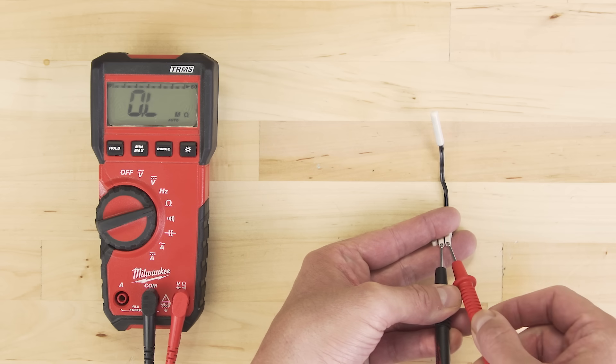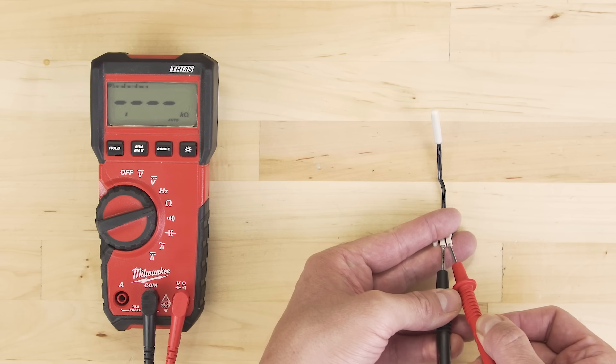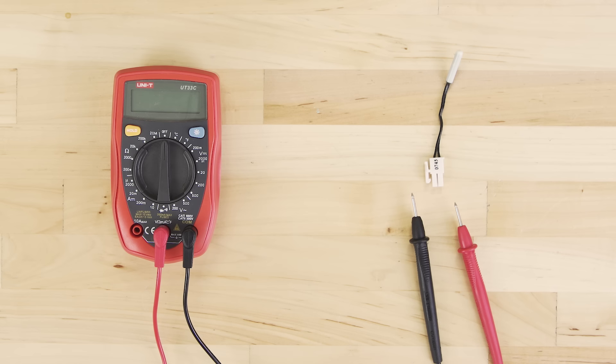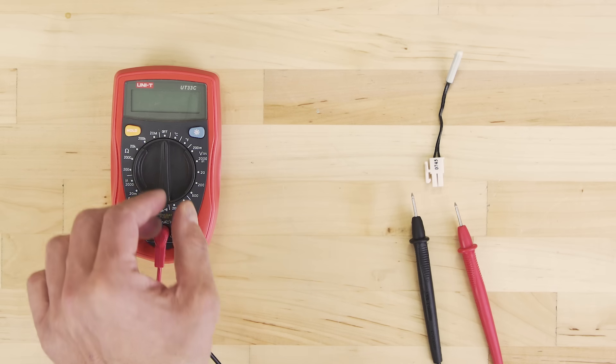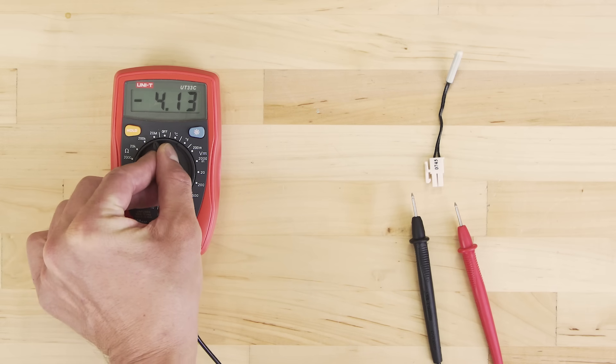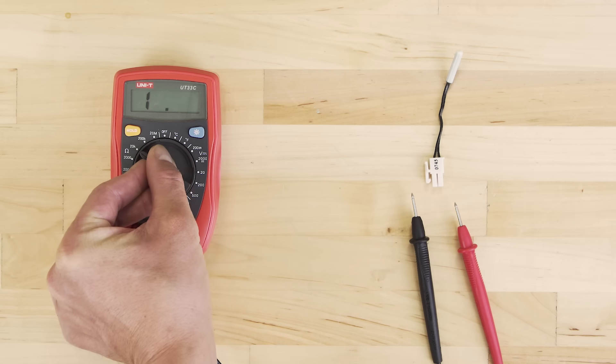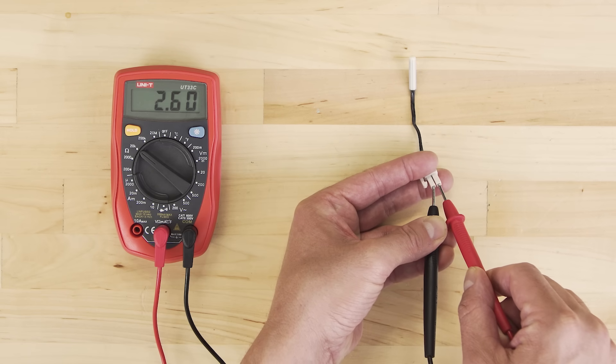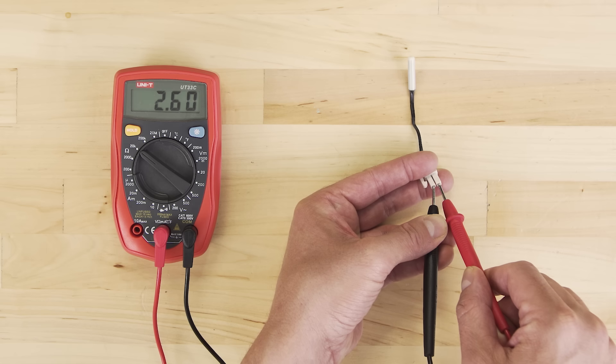Some multimeters are auto-ranging, and will automatically adjust the units displayed. In other models, you'll have to set the multimeter to the most accurate range. For example, if we test continuity at the 20K setting, and we get a reading of 2.6, then the resistance is 2600 ohms.